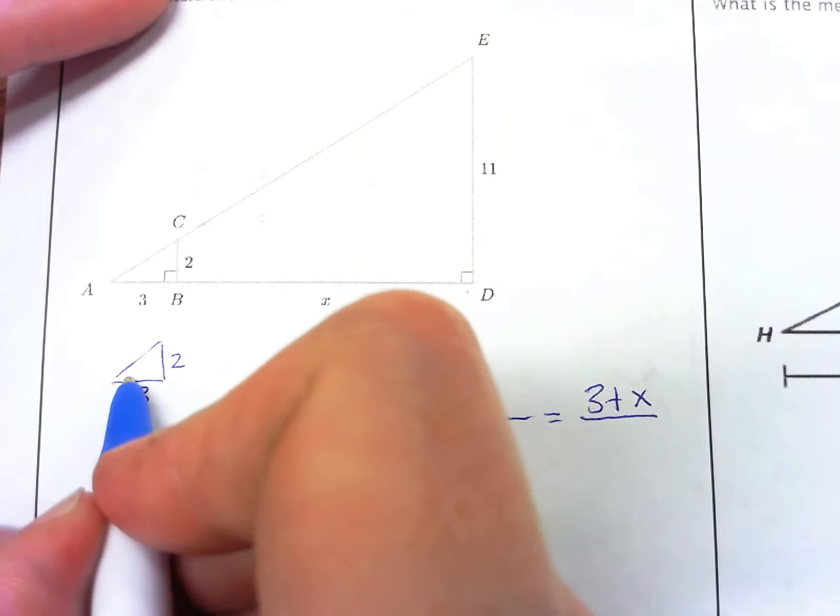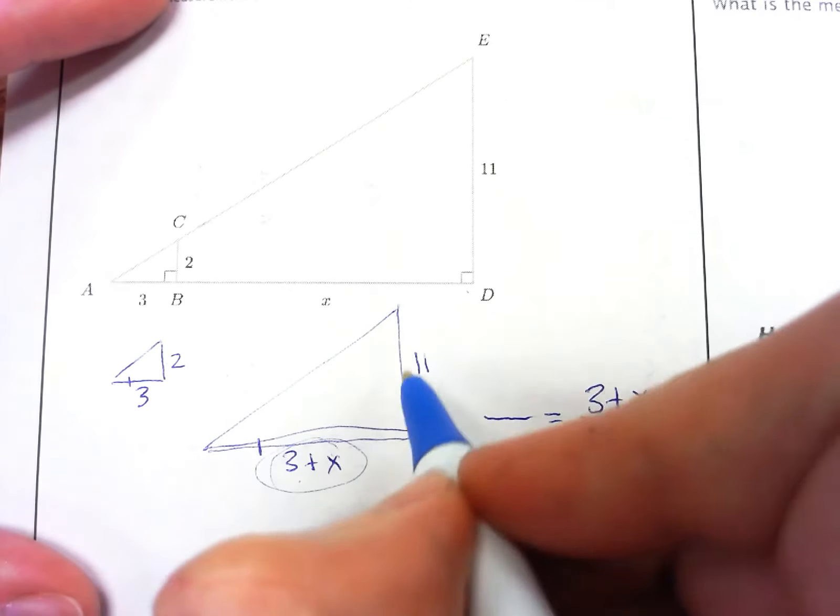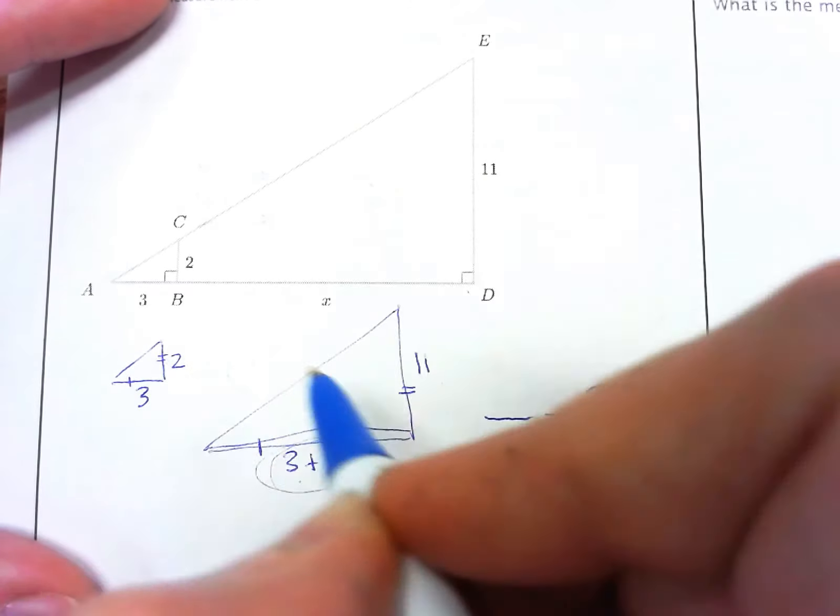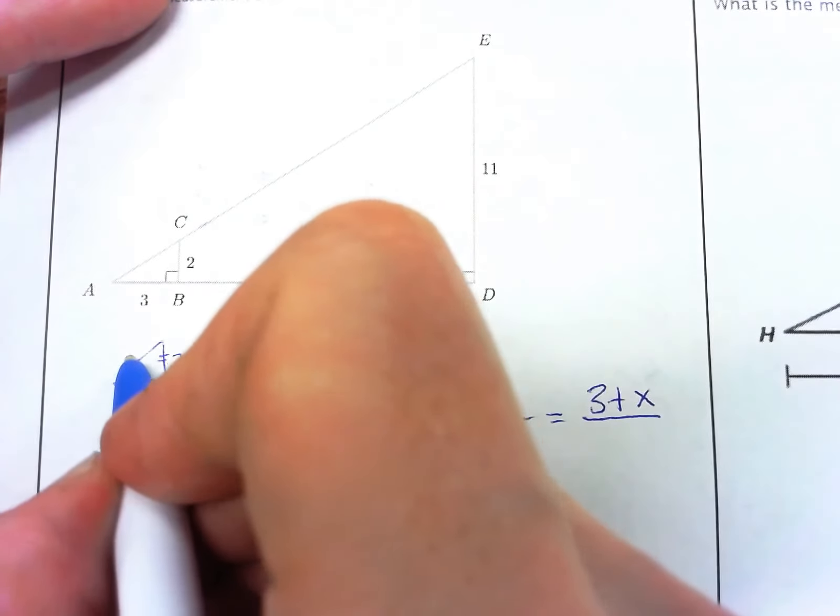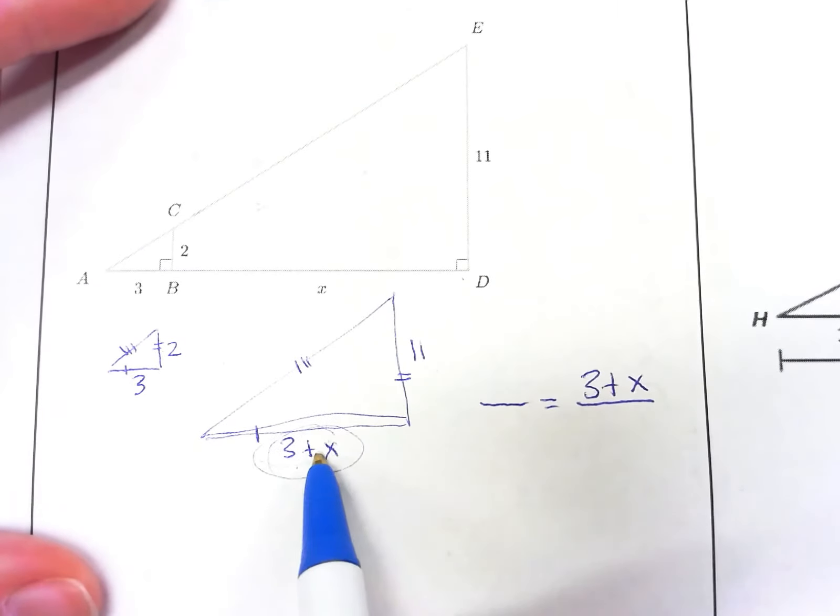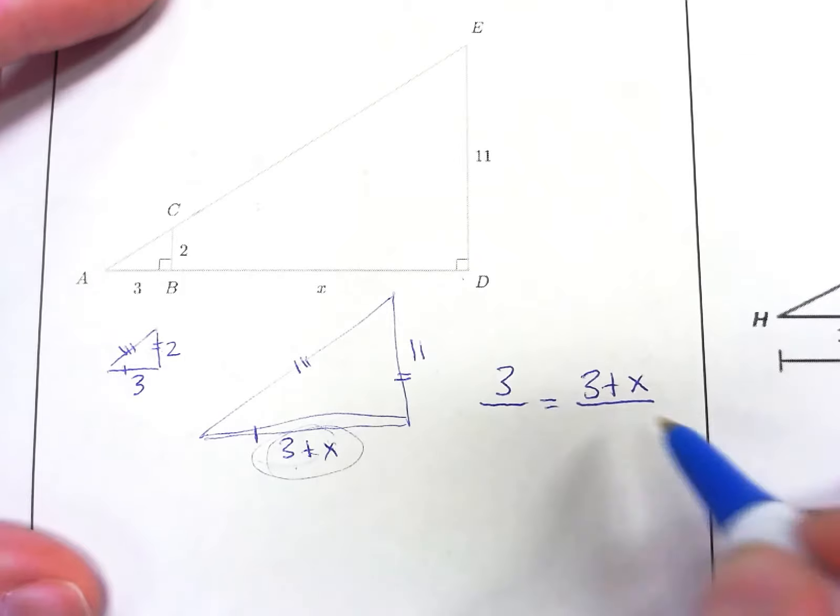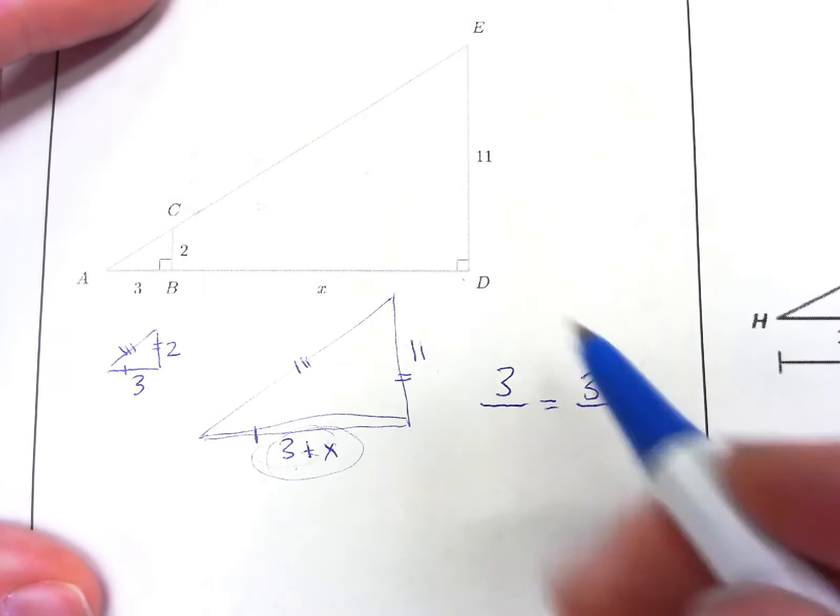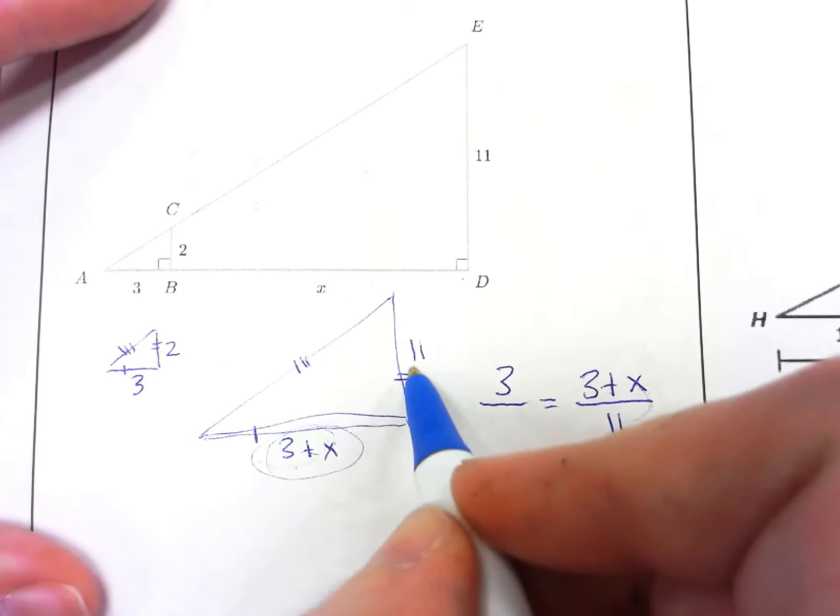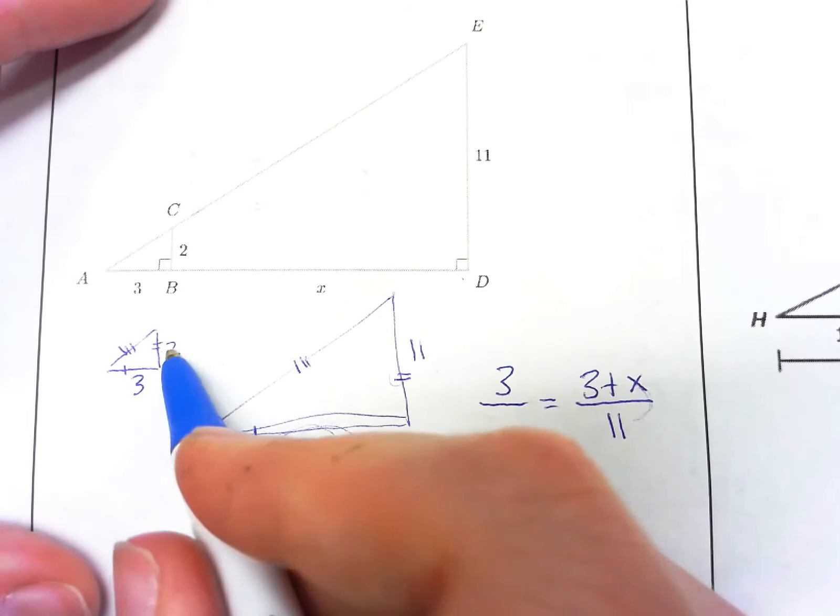I forgot to label. So this should be one tick mark, one tick mark. This will be two tick marks, and then this will be three tick marks. So if this is one tick mark, it matches up with this side, which is also one tick mark, which is 3. And then I need a known side from the same triangle. So the known side from the same triangle would be 11. It has two tick marks. Two tick marks over here matches up with 2.